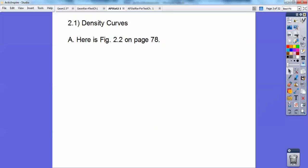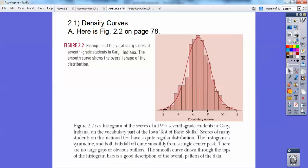All right, so density curves. Here's a figure on page 78 that's a nice symmetrical curve, and this is a histogram of 7th grade students in Gary, Indiana. The smooth curve shows the overall shape of the distribution. So this is the score of all 947 7th grade students in Gary, Indiana on the vocab test for the Iowa test of basic skills.